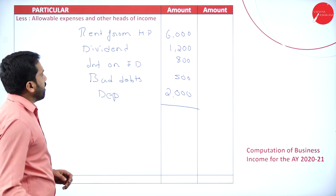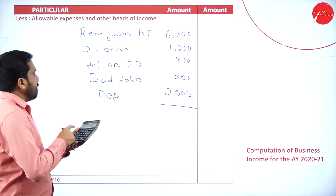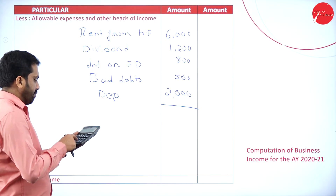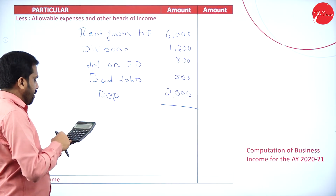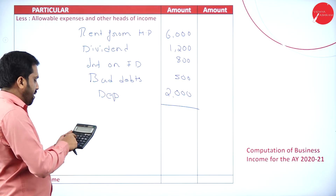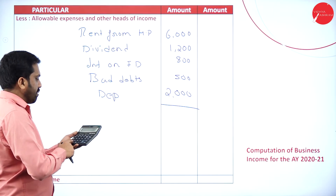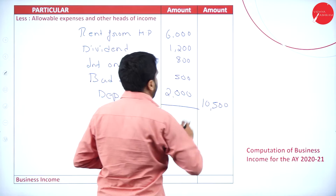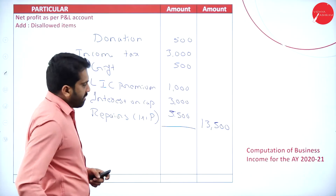Adding all deductions: 6,000 plus 1,200 plus 800 plus 500 plus 2,000. I got 10,500. So 10,500 is our total deductions.